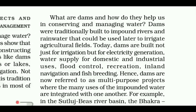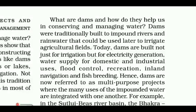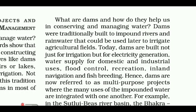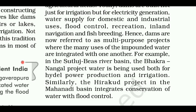Dams were traditionally built to impound rivers and rainwater that could be used later to irrigate agricultural fields. Today, dams are built not just for irrigation but for electricity generation, water supply for domestic and industrial usage, flood control, recreation, inland navigation, and fish breeding. Hence, dams are now referred to as multipurpose projects where the many uses of the impounded water are integrated with one another.